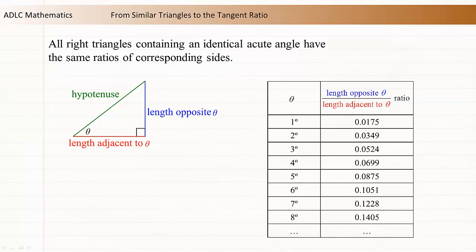We can use this rule to represent many triangles using a table. For example, we can draw a right triangle with an acute angle of theta and focus on the ratio of the length that is opposite theta to the length that is adjacent to theta.